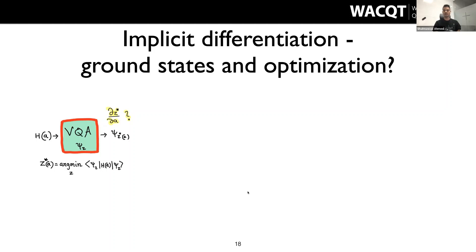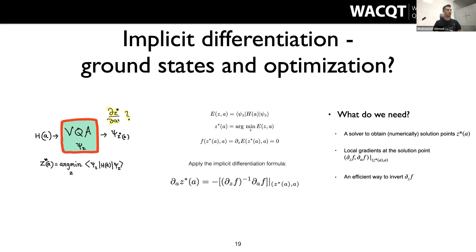What can we use implicit differentiation for in variational quantum algorithms? We have a variational ansatz and a Hamiltonian whose ground state we find by optimizing variational parameters z. We then want to see what happens to the ground state energy or any expectation value as we change the Hamiltonian parameters 'a'. Formally, we want the gradient of the solution function — the minimizer z*(a) — with respect to 'a'.